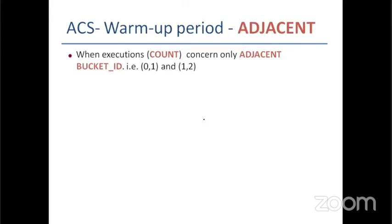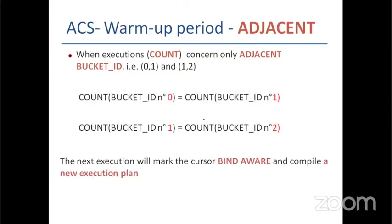Let's see the rule for the first case. The rule is simple: when executions are done at adjacent bucket IDs — 0 and 1, or 1 and 2 — when the number of executions at bucket ID 1 equals the number of executions at bucket ID 0, then the next execution will mark the cursor bind aware and compile a new execution plan.